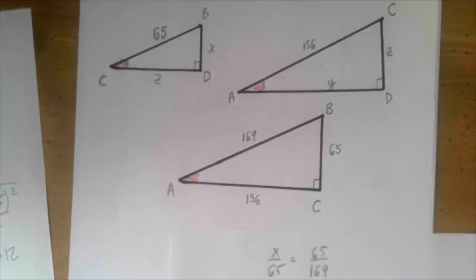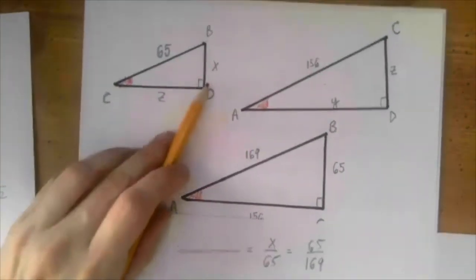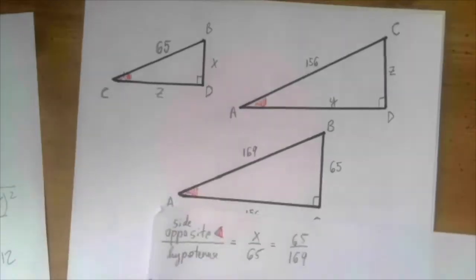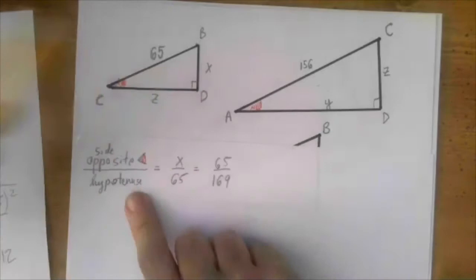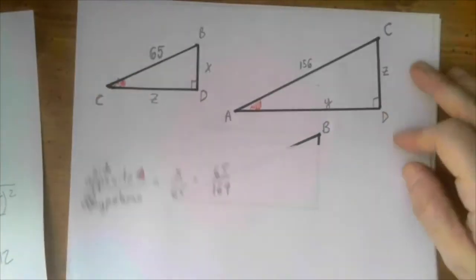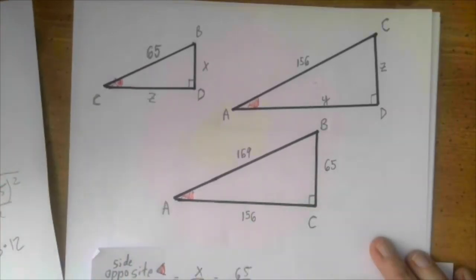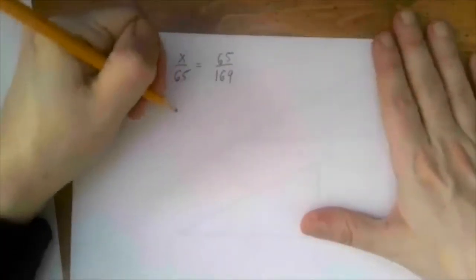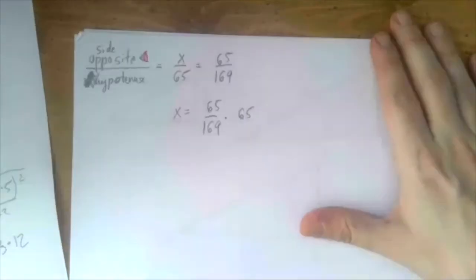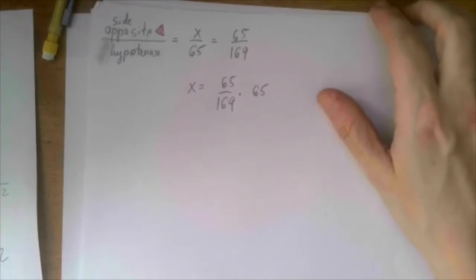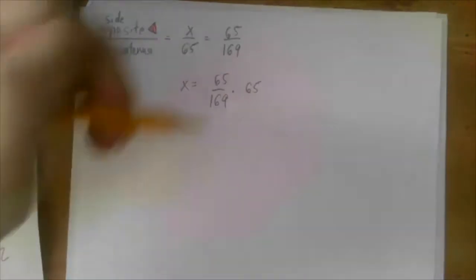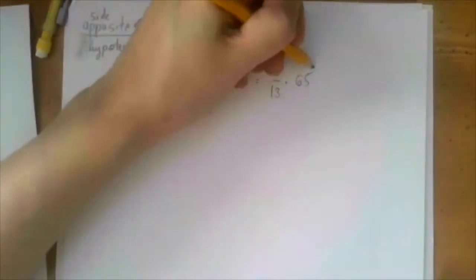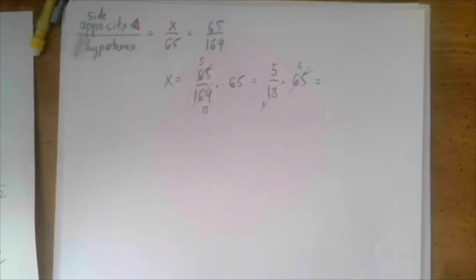When we multiply both sides by 65, we get x equals 65 over 169 times 65. Since 169 is 13 squared and 65 is 13 times 5, we can cancel a 13 to get 5 over 13 times 65. Then 65 is still 5 times 13, so we cancel another 13, leaving 5 times 5 over 1, which is 25. So x equals 25.